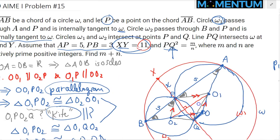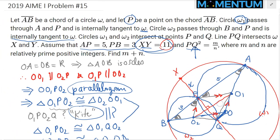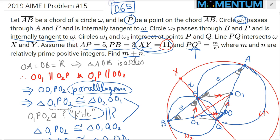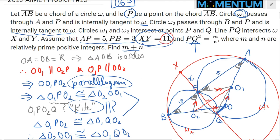Finally, the question asked for M plus N where M and N are the numerator and denominator of PQ squared. So 61 + 4 = 65 is the answer. There are quite a few different ways to solve this problem — I highly recommend checking the AOPS community page for this problem.